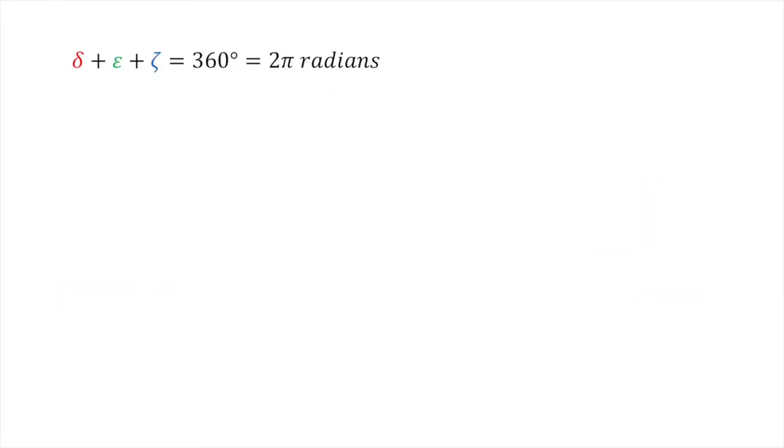Substituting the angles delta, epsilon, and zeta in terms of alpha, beta, and gamma we get: In brackets 180 degrees minus alpha plus in brackets 180 degrees minus beta plus in brackets 180 degrees minus gamma equals 360 degrees.